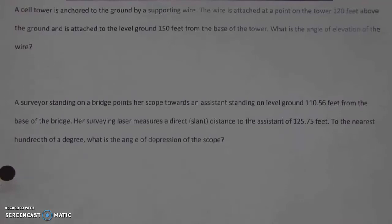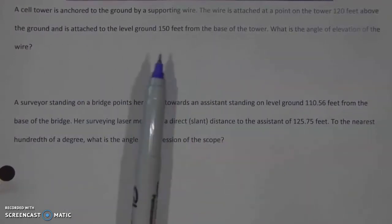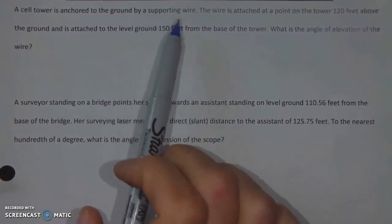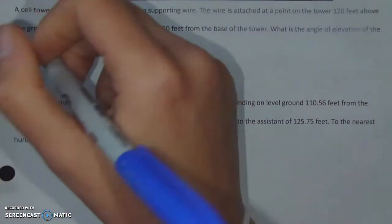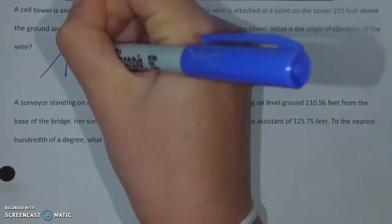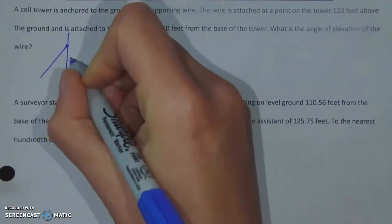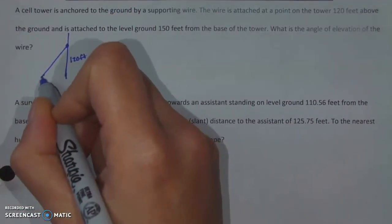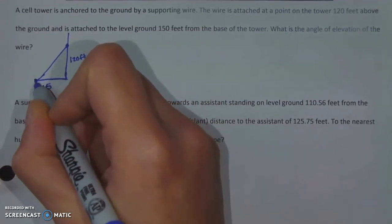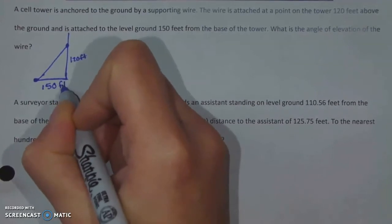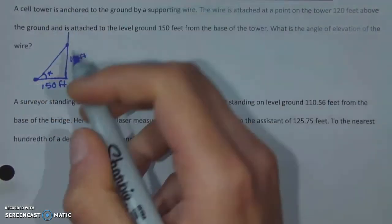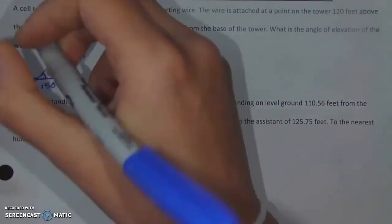Of course, you always also have to watch out for word problems because they can throw us off just by how they're laid out. But anytime that you can draw a picture, draw a picture. I'm just going to show you how to recognize a problem that will use inverse trig functions. Let's say we have a cell tower that's anchored to the ground by a supporting wire. The wire is attached to a point on the tower 120 feet above the ground. So I'm just going to sketch myself a tower. Here's where it attaches, and that is 120 feet above the ground. It is attached to the level ground 150 feet away from the base of the tower. So where this line attaches to the ground is 150 feet away. Now I want to know what is this angle of elevation for the wire. And I know I want this one because remember angle of elevation goes from the ground upwards.